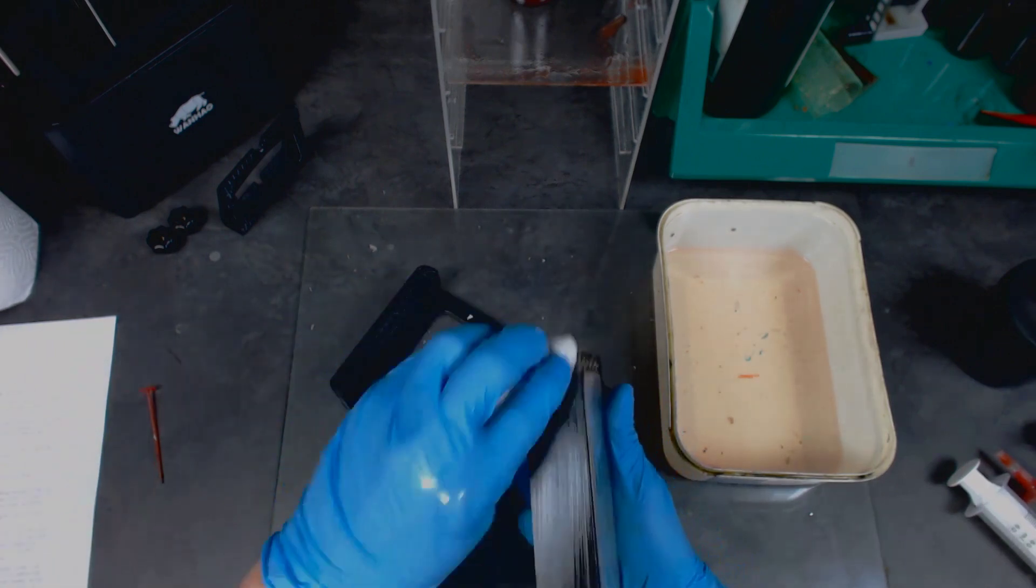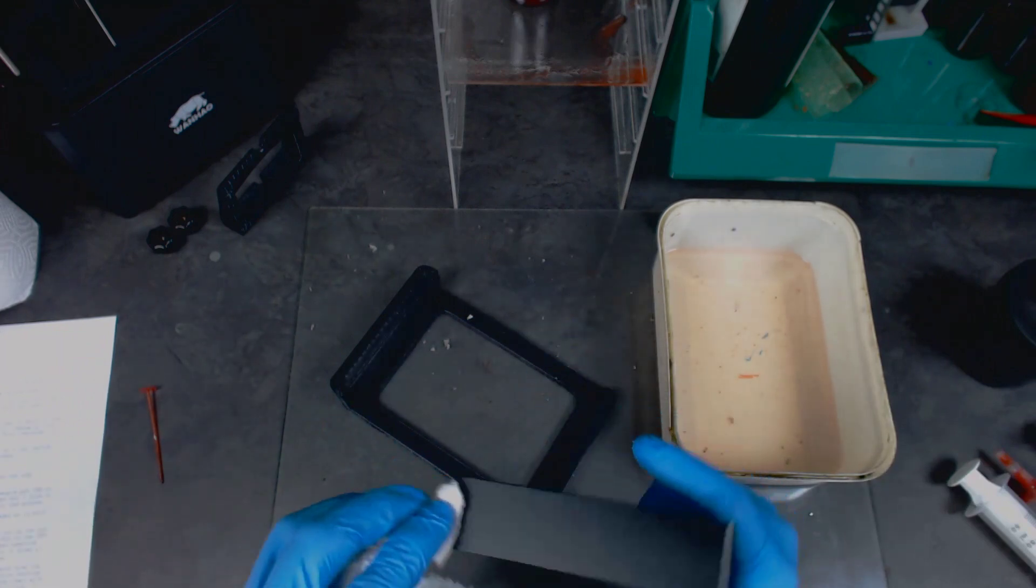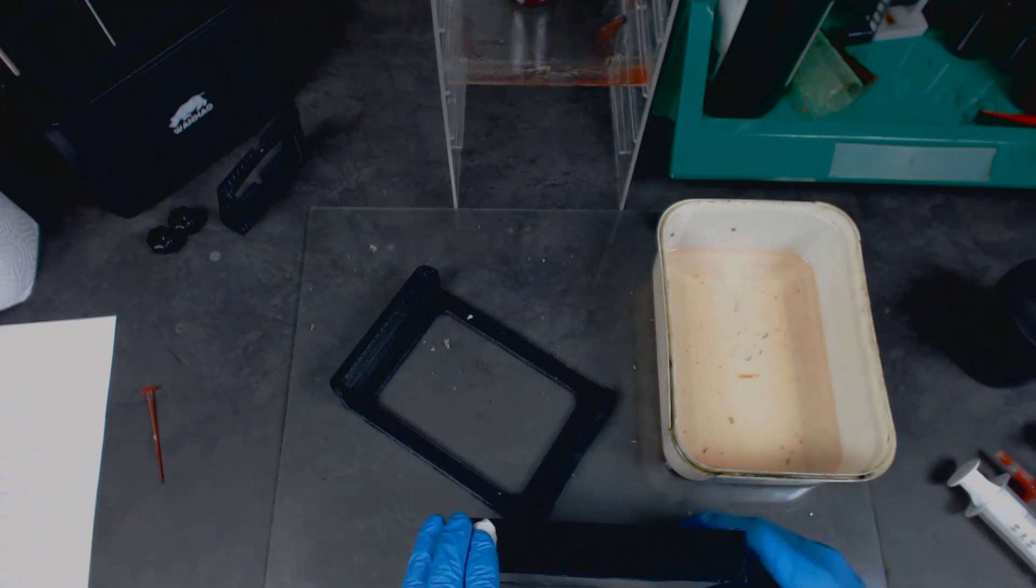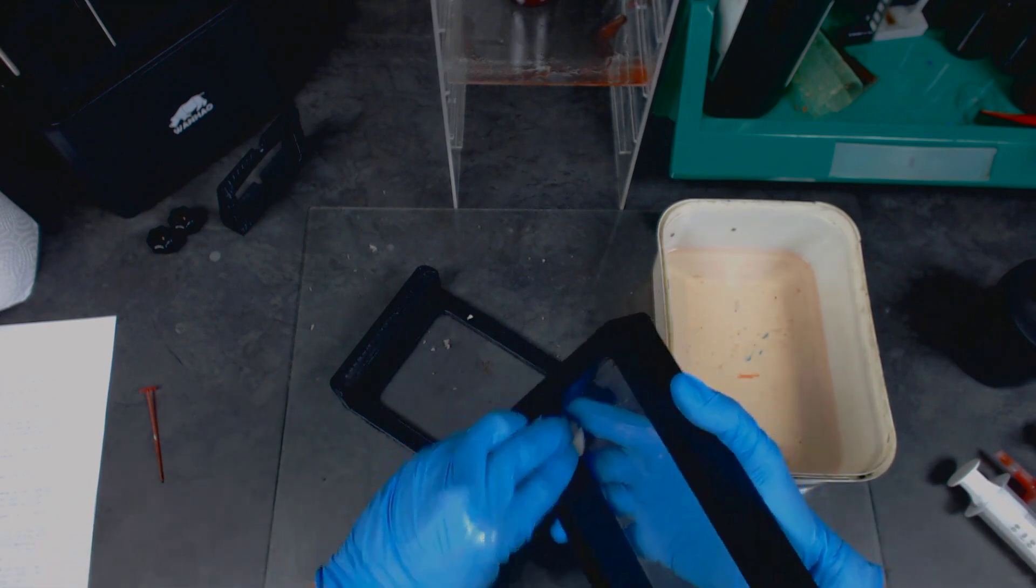Another very bad idea is to put the vat out in the sun to cure as the resin will cure solidly to the FEP and you're more likely to puncture the FEP when removing it. I know this because I tried it. I tried it so you don't have to. You're welcome.